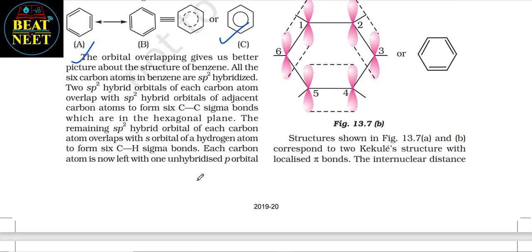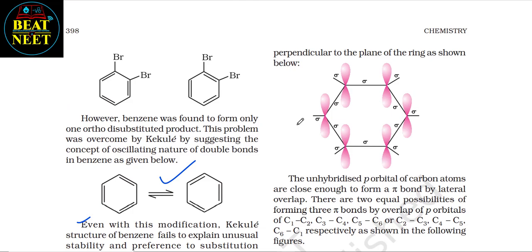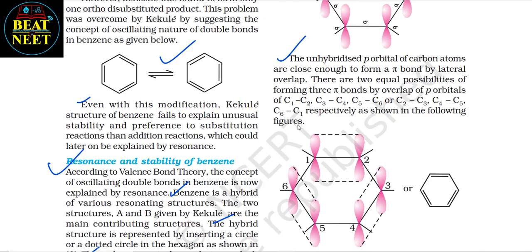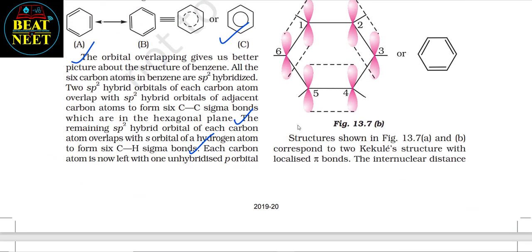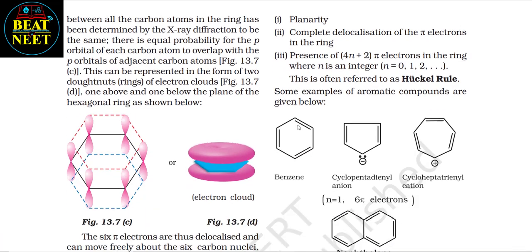All six carbon atoms in benzene are sp²-hybridized. Two sp² hybrid orbitals of each carbon overlap with sp² orbitals of adjacent carbons to form six C–C sigma bonds in the hexagonal plane. The remaining sp² hybrid orbital of each carbon overlaps with the s orbital of a hydrogen atom to form six C–H sigma bonds. Each carbon atom has one unhybridized p orbital perpendicular to the plane of the ring. These p orbitals can overlap in two equal ways — C1–C2–C3–C4–C5–C6 or C2–C3–C4–C5–C6–C1 — corresponding to the two Kekulé structures with localized pi bonds.